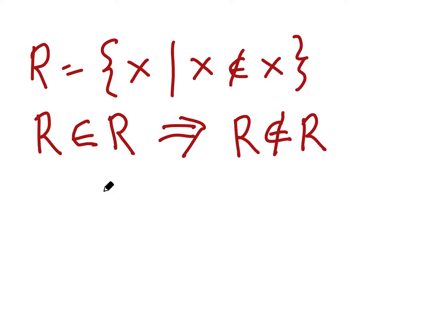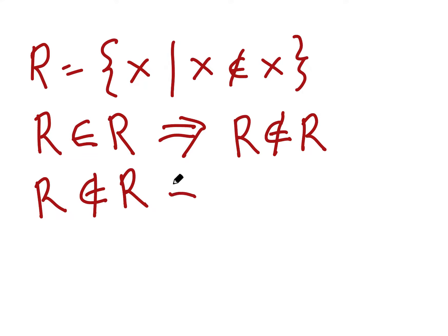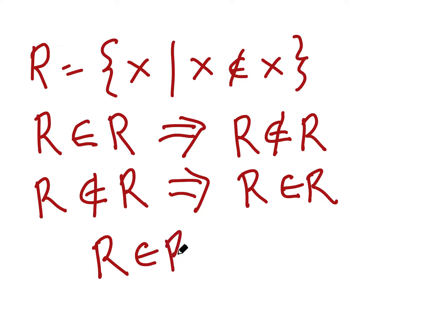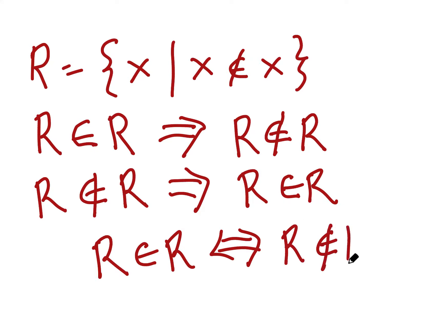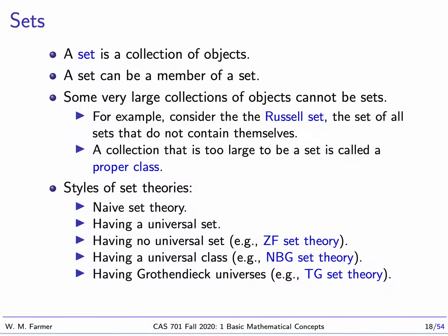So if R is a member of R, R must not be a member of R. Now suppose R is not a member of R — then R will be a member of this set, which implies that R is a member of R. We have just shown that R is a member of R if and only if R is not a member of R. This doesn't make logical sense, and this is called the Russell paradox.